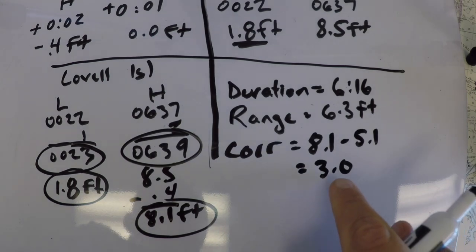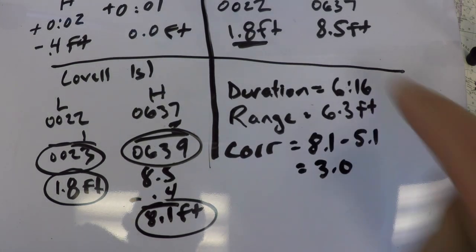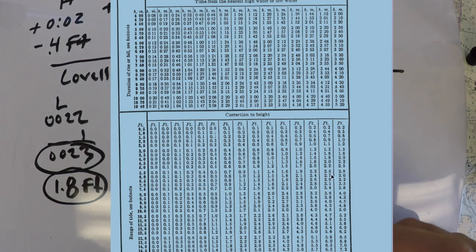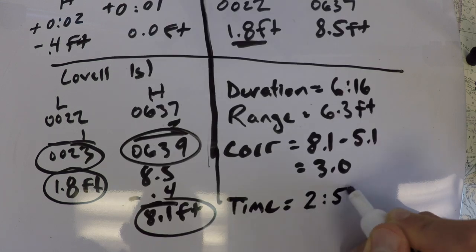So if we take this number, this number, and this number, and go into the table three, we end up with a time difference of about 2:57.